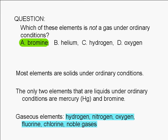Gaseous elements under ordinary conditions include choice C, hydrogen, nitrogen, choice D, oxygen, fluorine, chlorine, and the noble gases, which include choice B, helium.